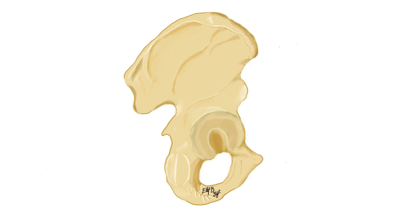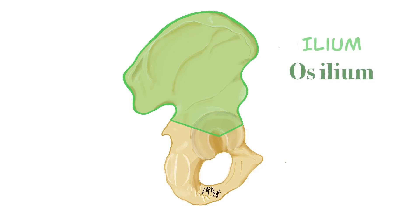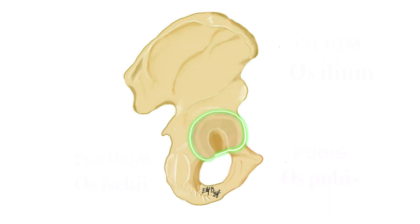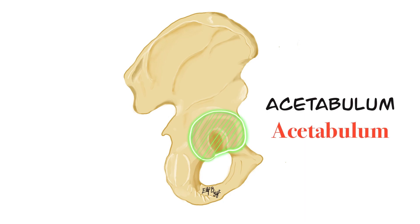Os coxa is formed by the fusion of three separate bones: the ilium bone (os ilium in Latin), the pubis bone (os pubis in Latin), and the ischium bone (os ischii in Latin). A deep pit called the acetabulum is formed at the junction of these three separate bones.